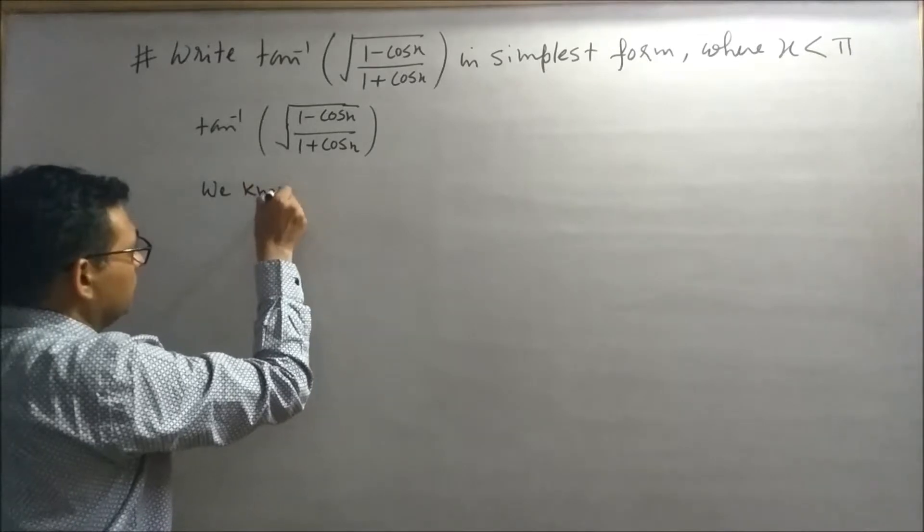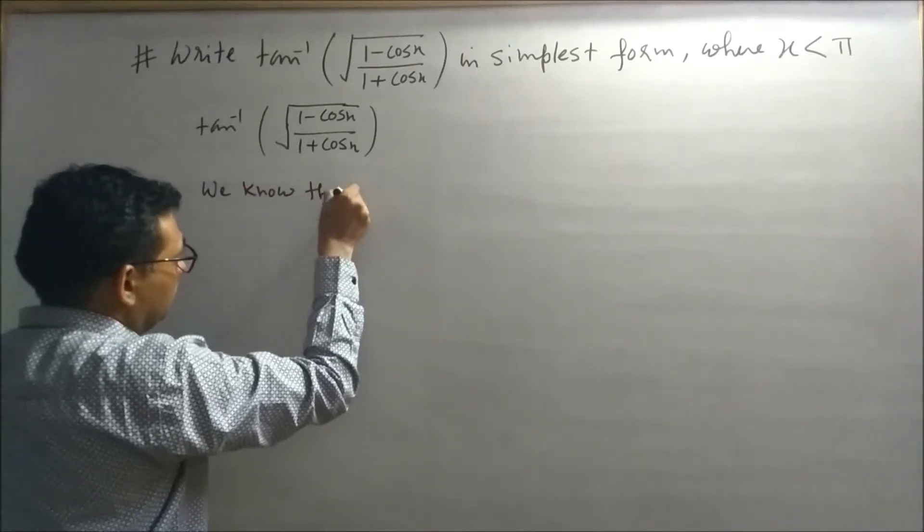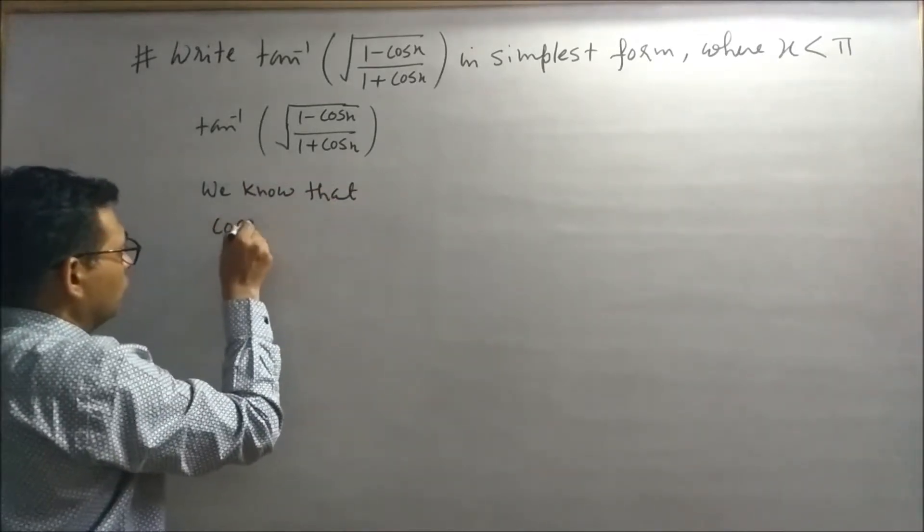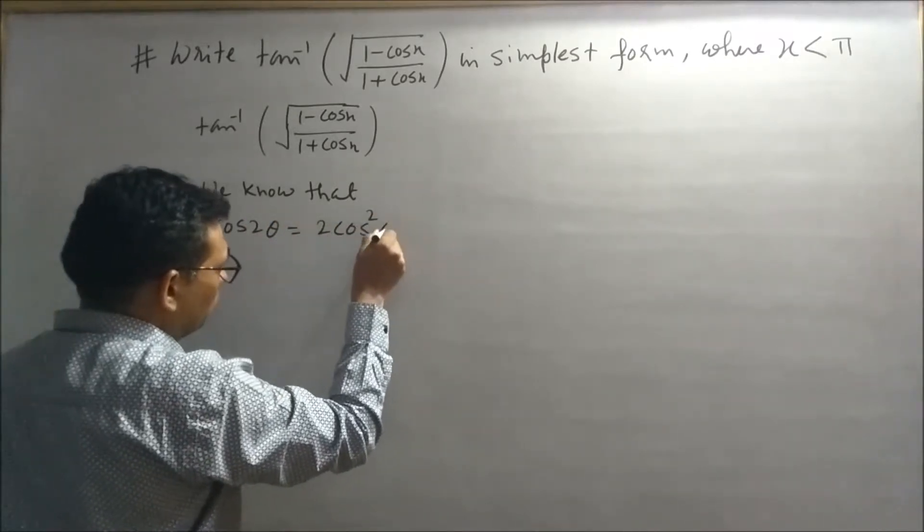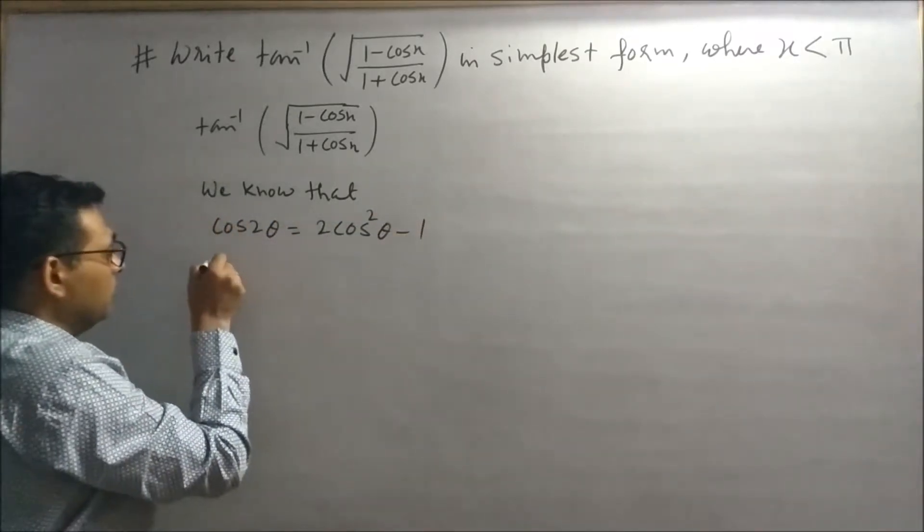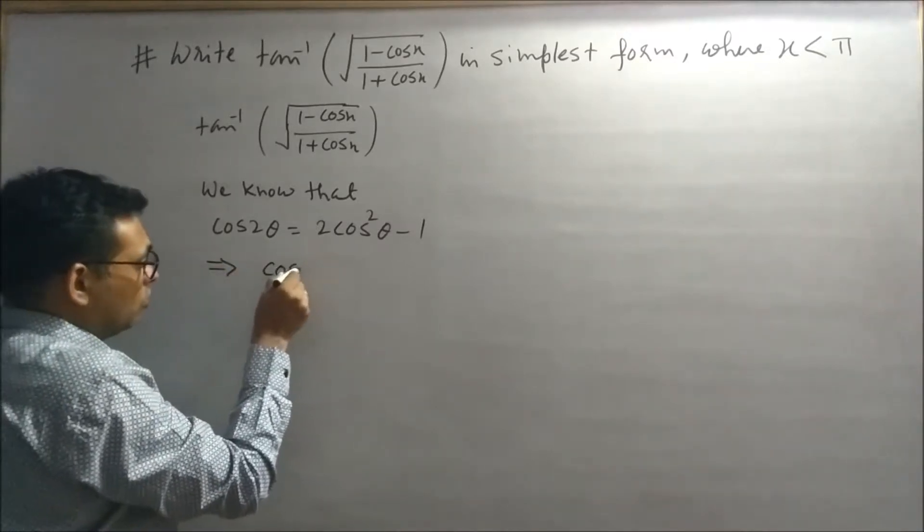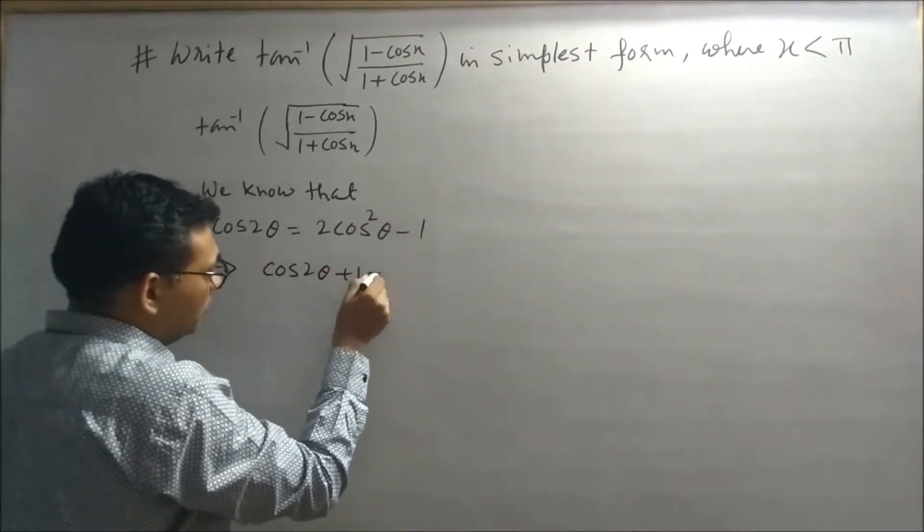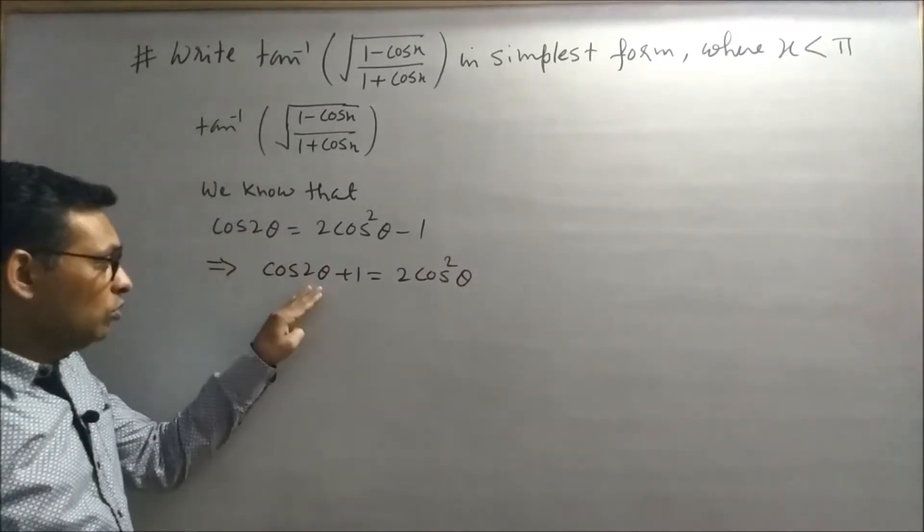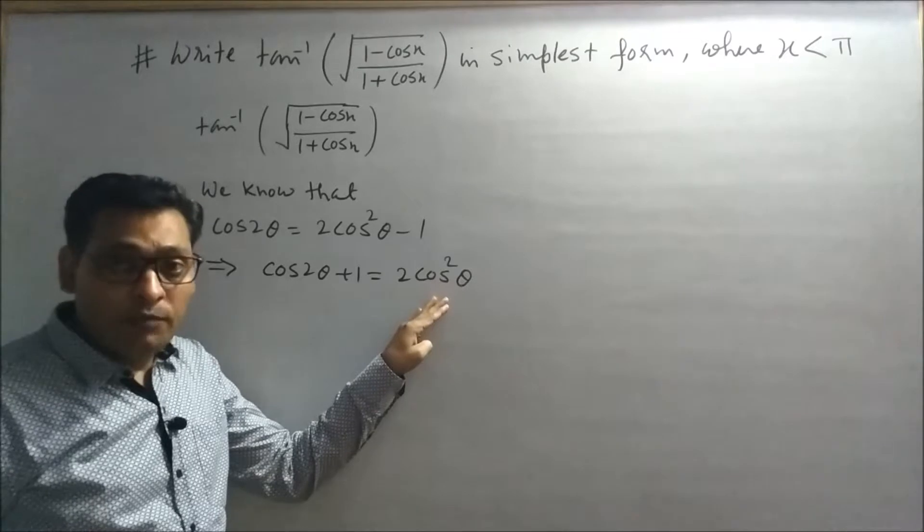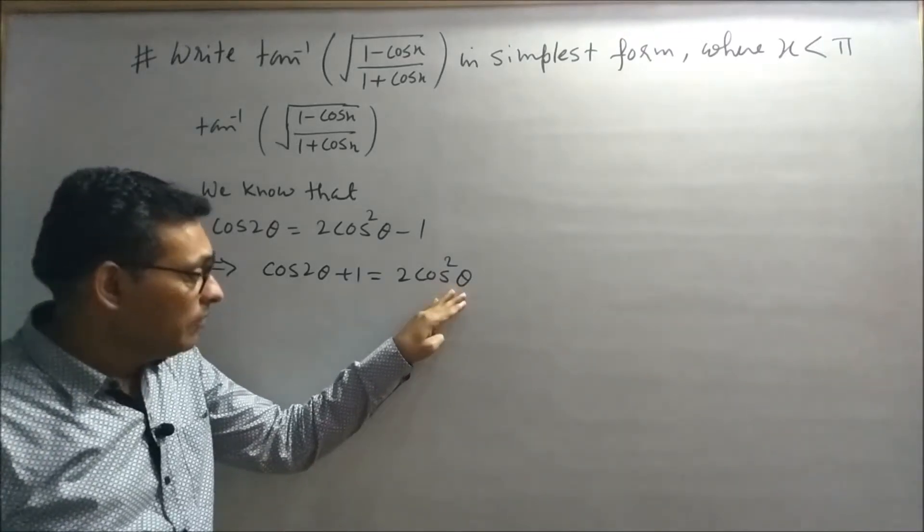We know that cos 2θ is equal to 2 cos² θ minus 1, which implies that cos 2θ plus 1 is equal to 2 cos² θ. This means 2θ is changed to θ here, that is half angle.